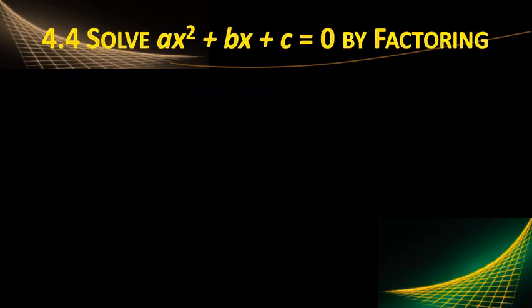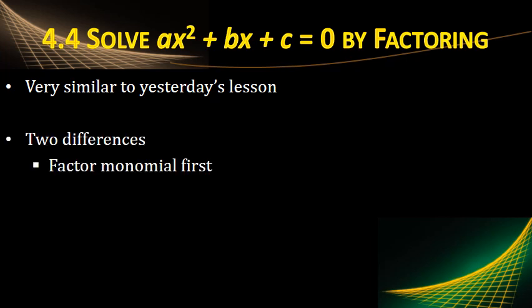Lesson 4.4: Solve ax squared plus bx plus c equals zero by factoring. Very similar to yesterday's lesson, the only difference is the a.